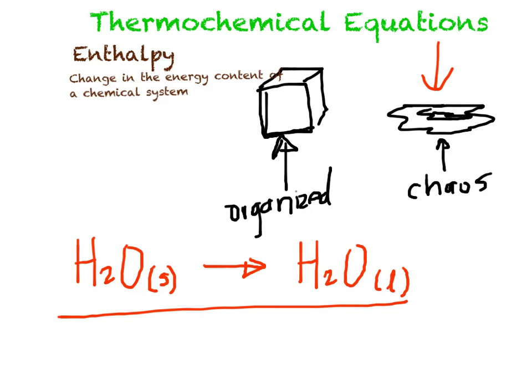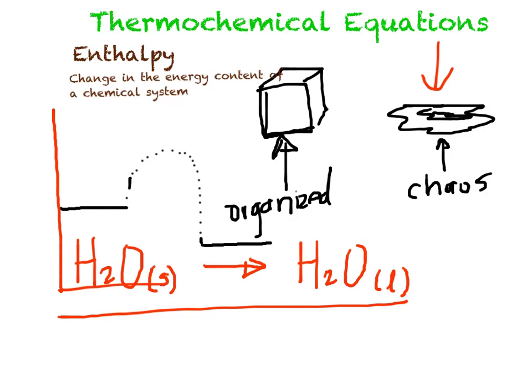Enthalpy is seen as the energy content of a system, represented as delta H. When reading about the change in enthalpy, you're reading about the change in energy content of a particular system. In chemical reactions, we see an initial state — the reactants — then a process takes place, and this leads to the final state. The altitude on the energy graph represents the energy content, where the x-axis is time and the y-axis is energy.